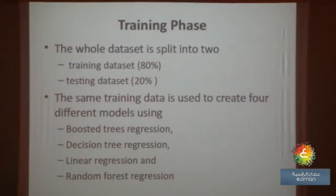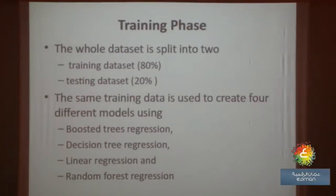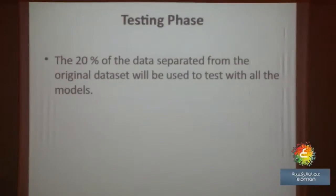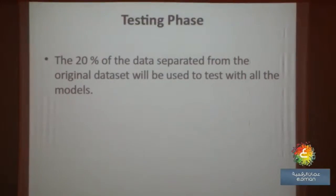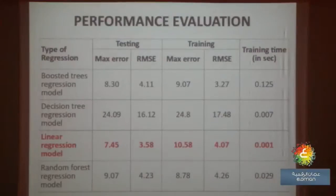This whole work was divided into two phases: training and testing. The whole dataset is divided with 80 percent taken for training and 20 percent for testing. We created four separate models using the Python machine learning library and implemented all four regression techniques, giving the same 80 percent of data to each to create a model. Once the model is trained — for example, given a mid examination mark and coursework mark, it predicts the final exam grade — we then took the testing data, the 20 percent, and tested all four models.